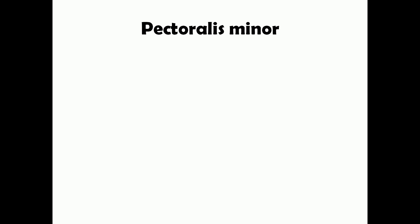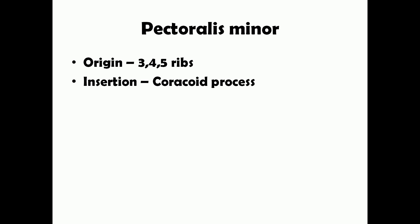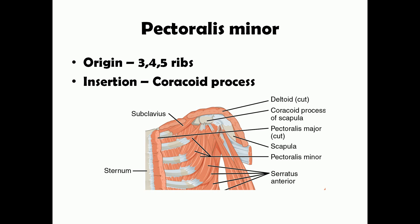Now let's see about pectoralis minor. Pectoralis minor originates from the third, fourth, and fifth ribs, and it gets inserted into the coracoid process of the scapula. In this picture you can see the pectoralis minor muscle, which has three origins — it arises from the third, fourth, and fifth ribs, goes upward, and inserts into the coracoid process of the scapula.